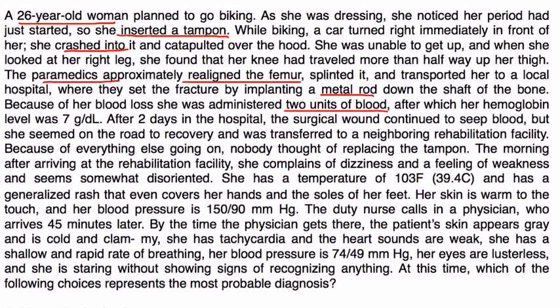Because of her blood loss, she was administered two units of blood, after which her hemoglobin level was seven. After two days in the hospital, the surgical wound continued to seep blood, but she seemed on the road to recovery and was transferred to a neighboring rehab facility. Because of everything else going on, nobody thought of replacing the tampon. The morning after arriving at the rehab facility, she complained of dizziness, weakness, and seemed somewhat disoriented. She had a temperature of 103°F and a generalized rash covering even her hands and soles of her feet, with skin warm to touch. Blood pressure was 150 over 90.